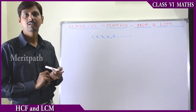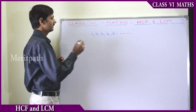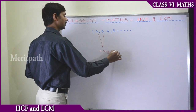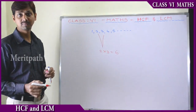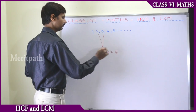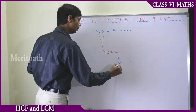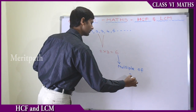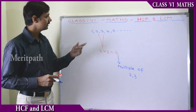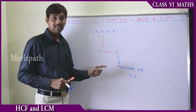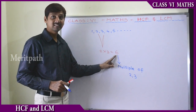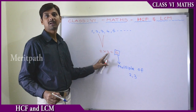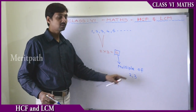If we take numbers 1, 2, 3, 4, 5, 6 and so on, and multiply any 2 numbers from this — let's take 2 and 3 — then 2 into 3 is equal to 6. Here, we got 6, and this 6 is called the multiple of 2 and 3. The result of multiplying two numbers is called the multiple of those numbers.